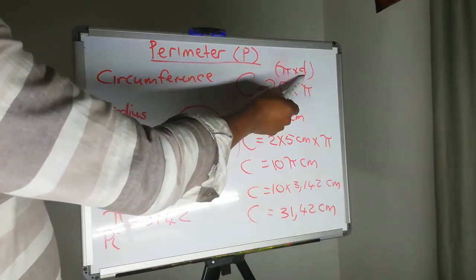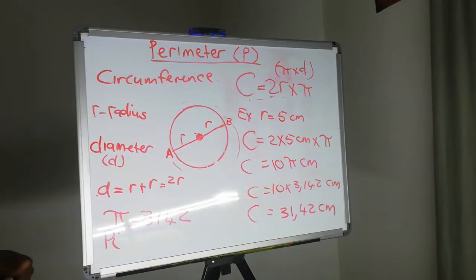So that is a different variation of writing it. So if they give you the diameter, you can use it as is in calculating the circumference. So you don't have to go and calculate the radius and then multiply it by two. You can use it as is.